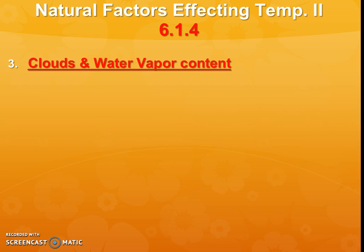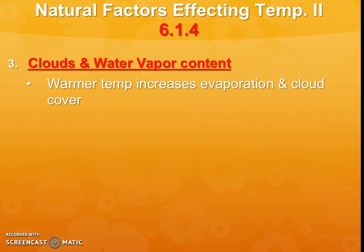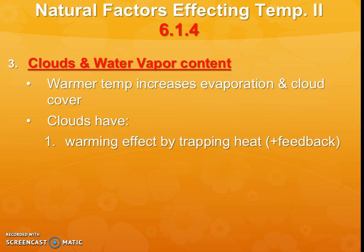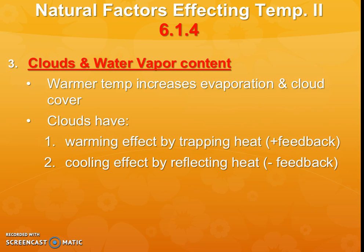Other things affected by temperature and related to feedback loops: we'll see clouds and water vapor content come up a lot. Warmer temperatures increase evaporation, and because of that we'll have more clouds. Clouds are going to be able to trap heat — some because they have that absorbing water capability, and water itself is a greenhouse gas. But they also can reflect heat by reflecting light. So they have a little bit of both, and depending on which feedback loop you're looking at, clouds might play both roles — which is an interesting thing to keep in mind.